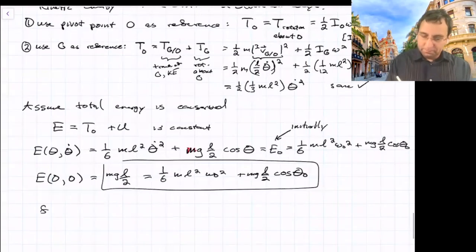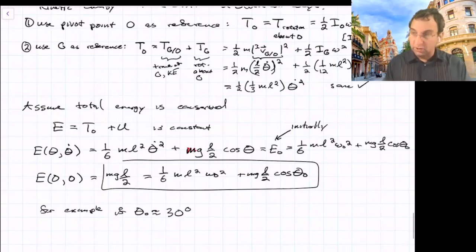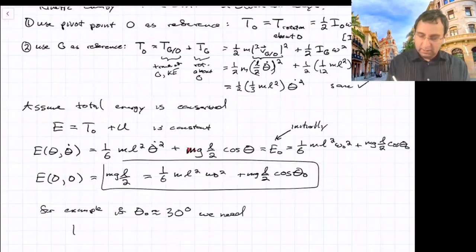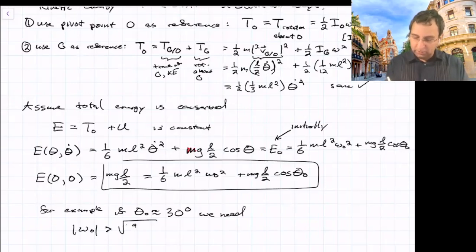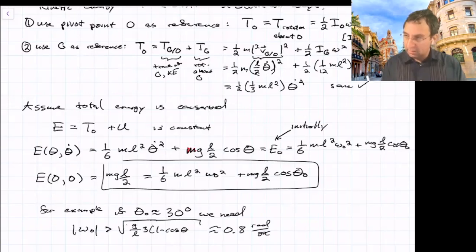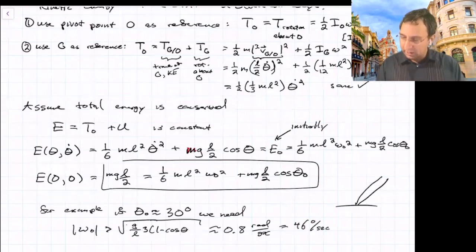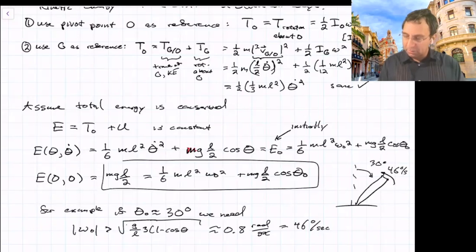For example, if the initial angle, it looks like it's often about 30 degrees. Then we need that the angular velocity is greater than square root G over L, three, one minus cosine theta, which is about 0.8 radians per second. Or if you want 46 degrees per second. So if you start with some angle, 30 degrees, then this has to be moving at 46 degrees per second to be able to barely make it to the top with just enough energy that it then goes over. And then you've won the caber toss.